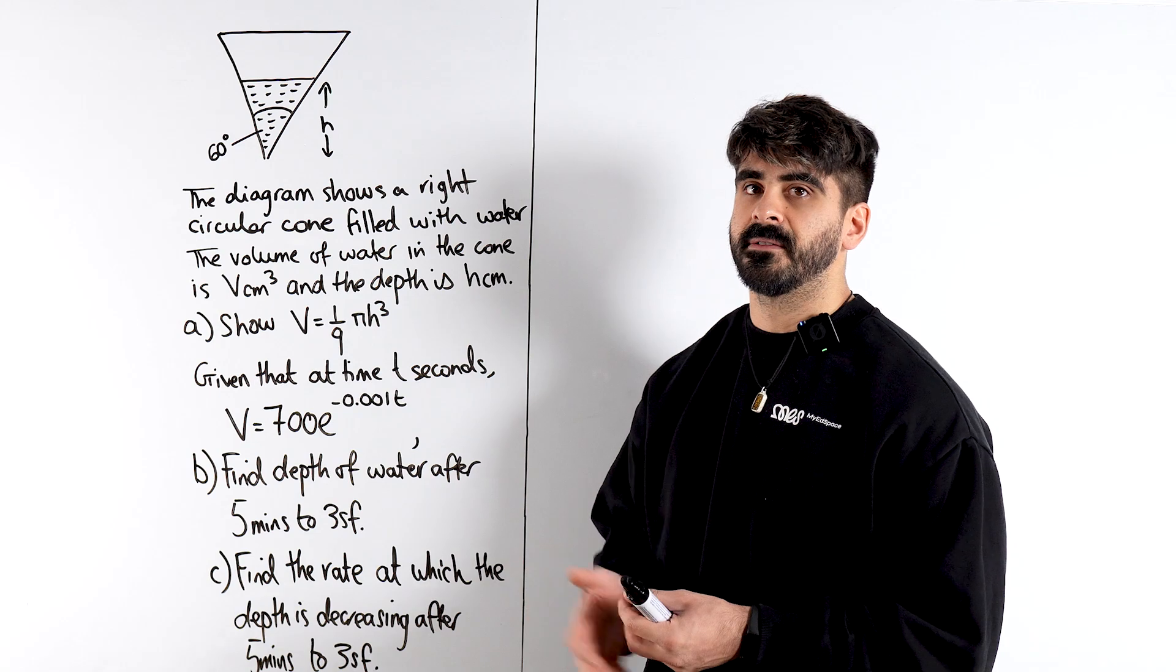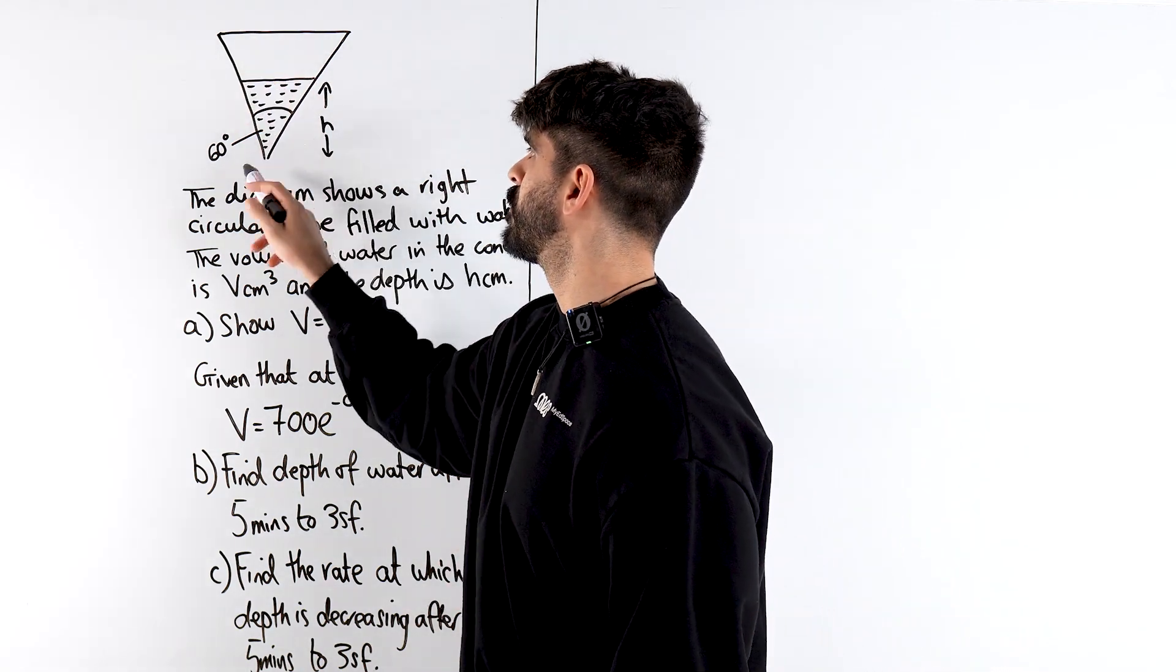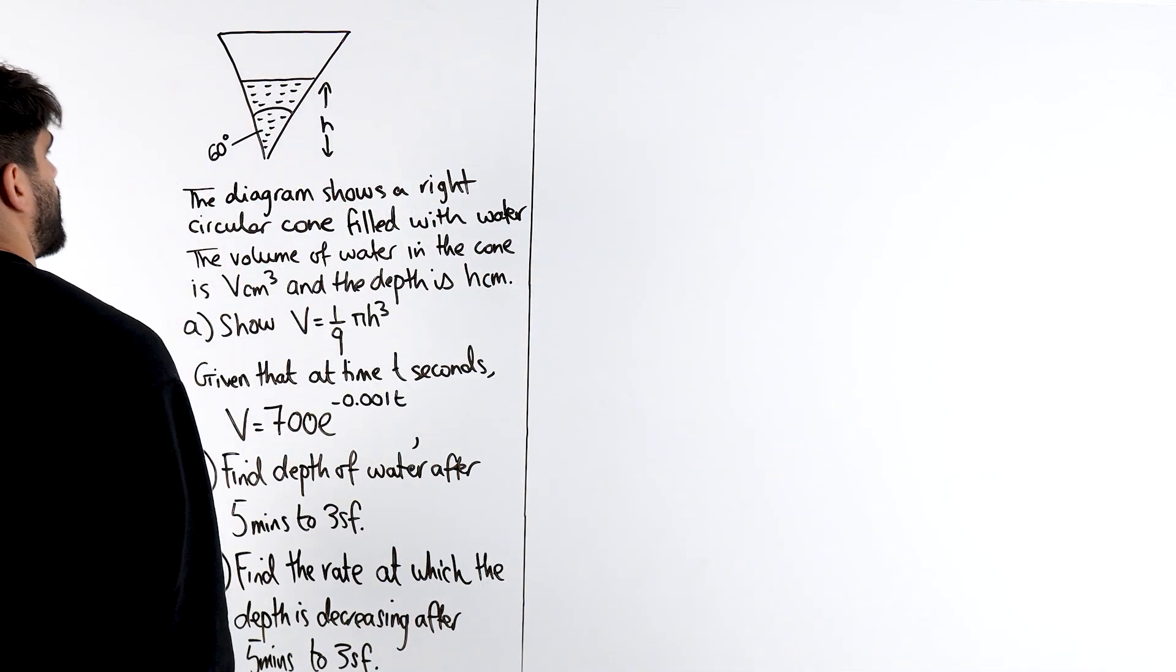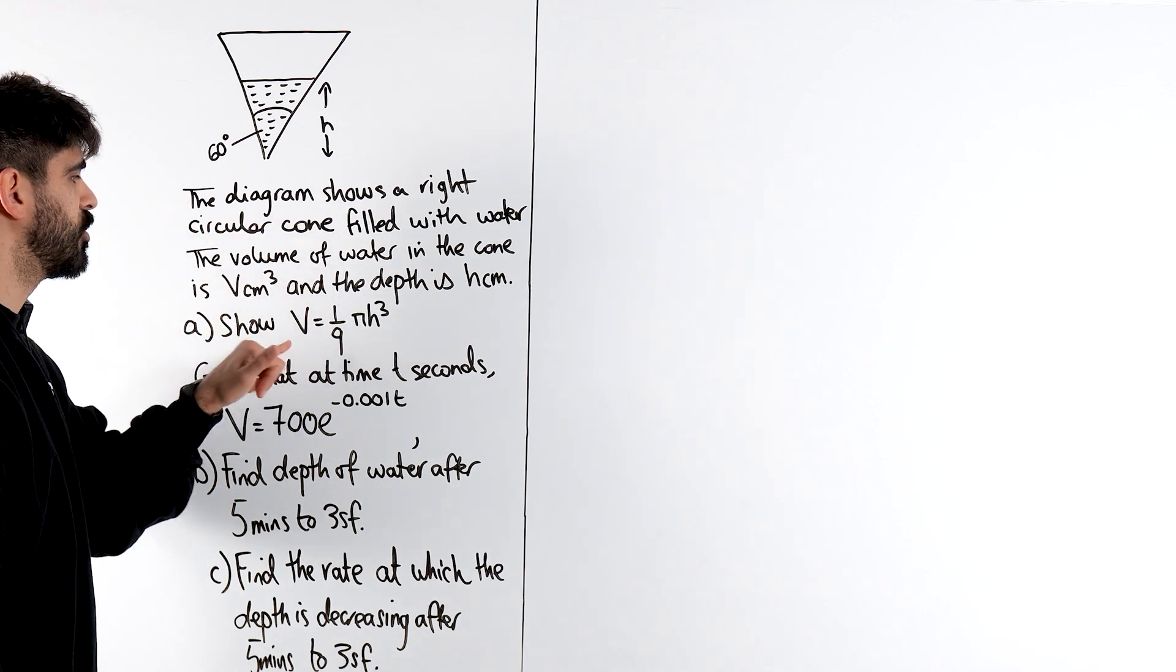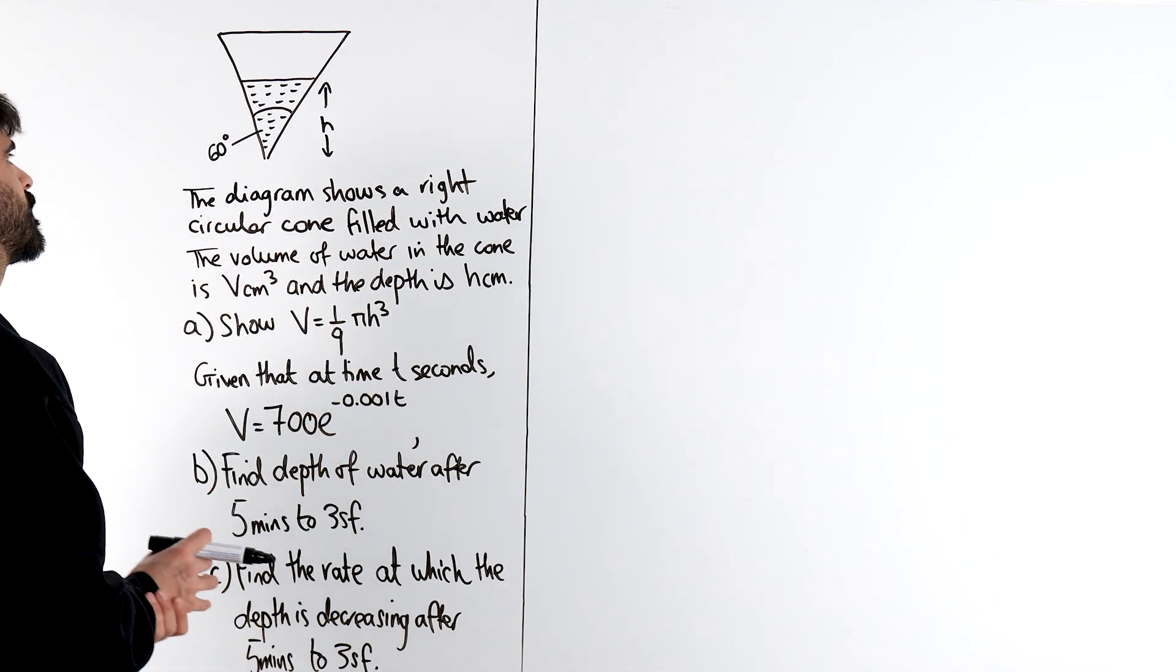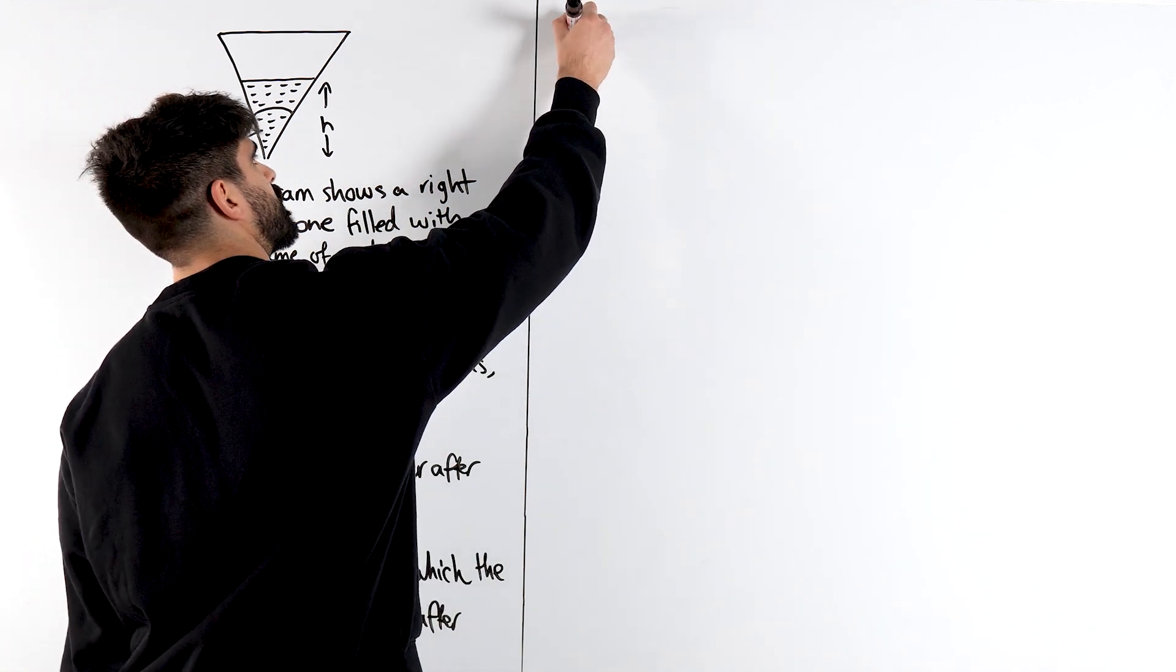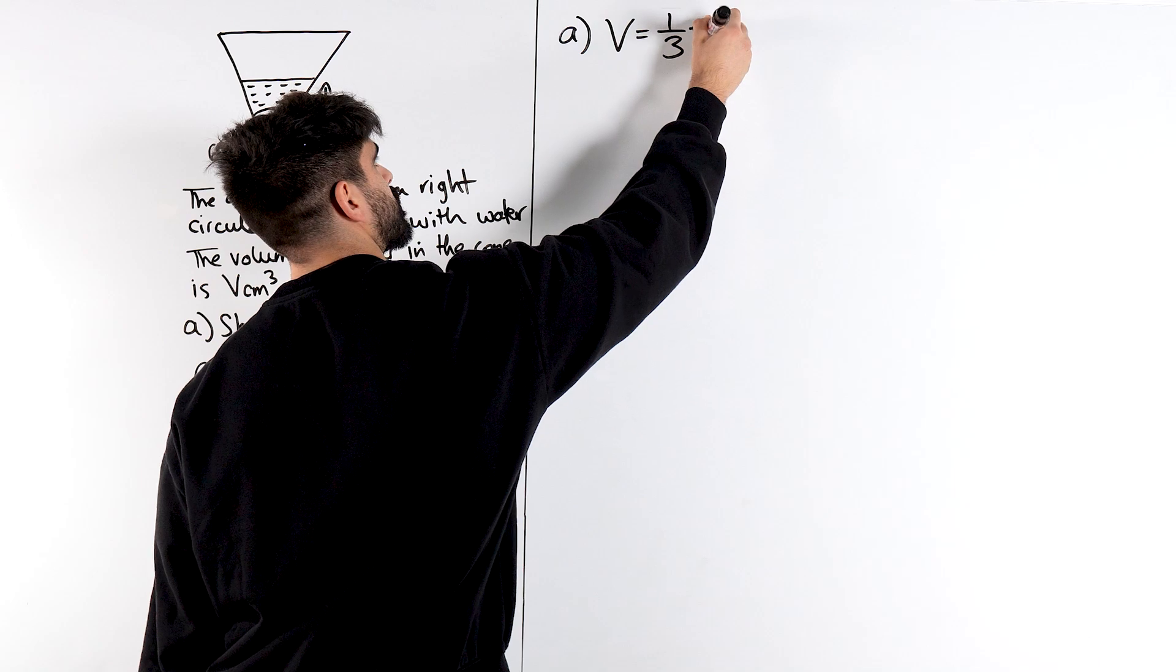Show that V has to be one ninth pi h cubed. Now, what does it mean by a right circular cone? It means that this cone can be made up of right angled triangles. So, we somehow need to figure out how to represent the volume in terms of h. Well, first thing we could do is write down what the volume of a cone is. It's one third pi r squared h.